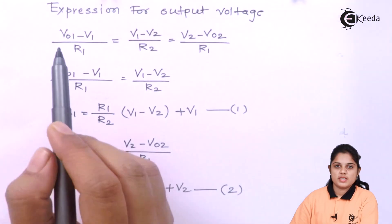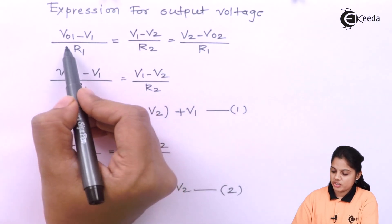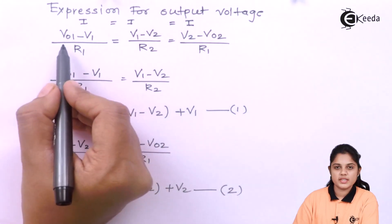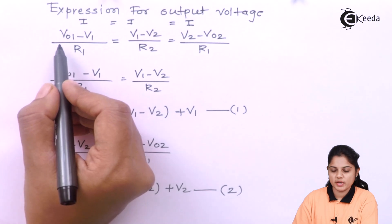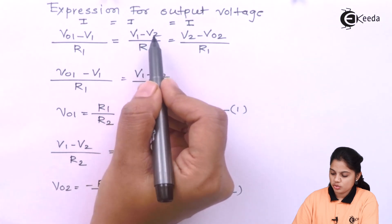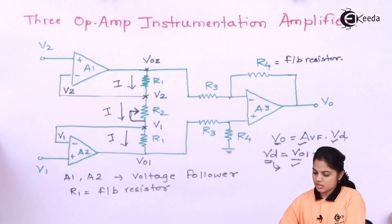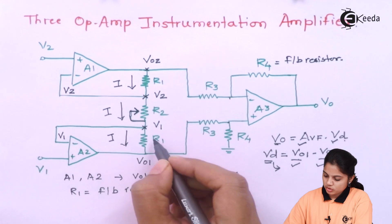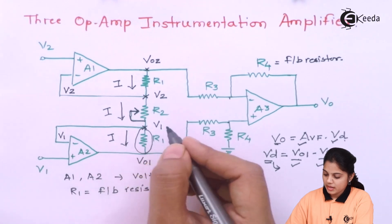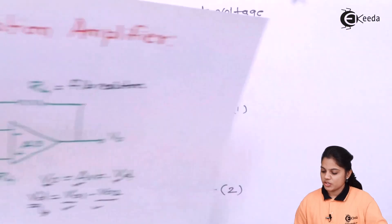Let's start with the derivation. The current equation is I = I = I, which from the circuit can be written as: V01 minus V1 divided by R1, equals V1 minus V2 divided by R2, equals V2 minus V02 divided by R1. The current flowing through each branch is: (V01 − V1)/R1 = (V1 − V2)/R2 = (V2 − V02)/R1.